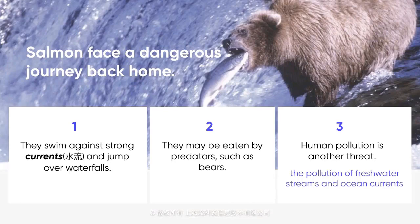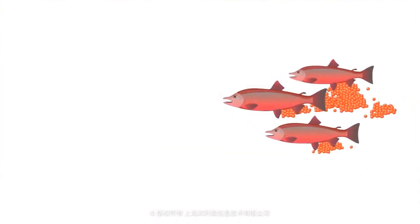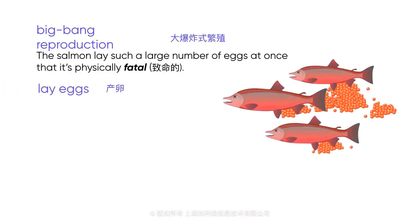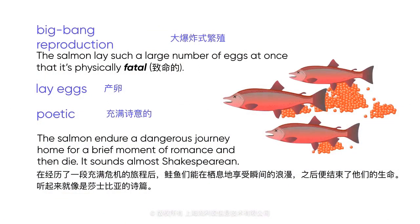However, after they have laid their eggs, most salmon die. This is known as Big Bang reproduction — the salmon lay such a large number of eggs at once that it's physically fatal. There's something poetic about salmon runs. The salmon endure a dangerous journey home for a brief moment of romance and then die. It sounds almost Shakespearean.